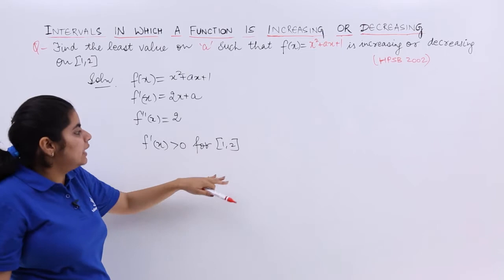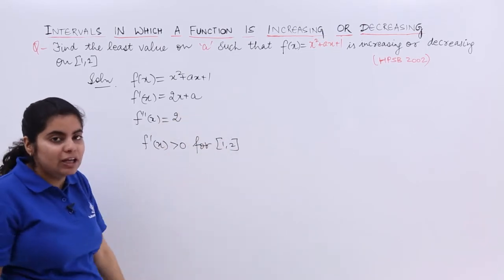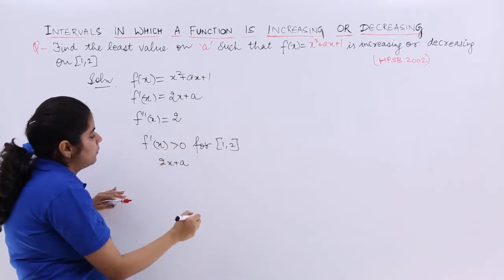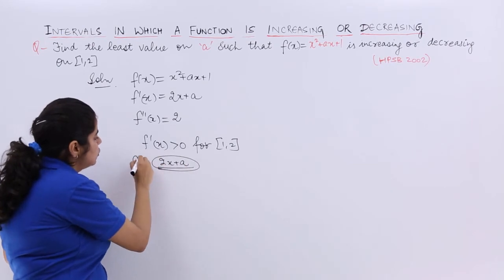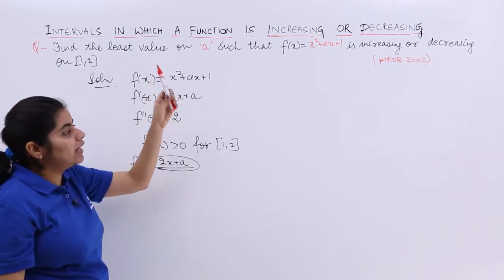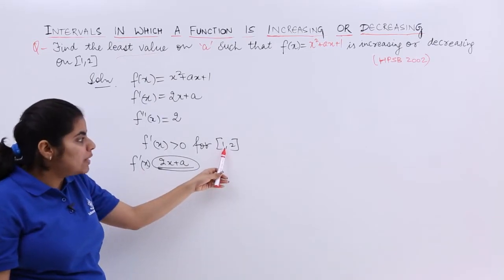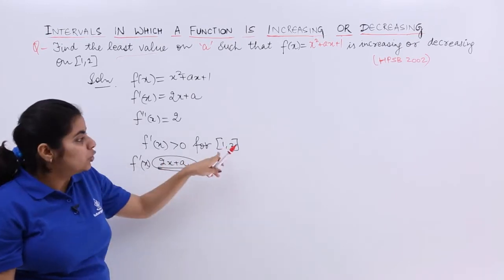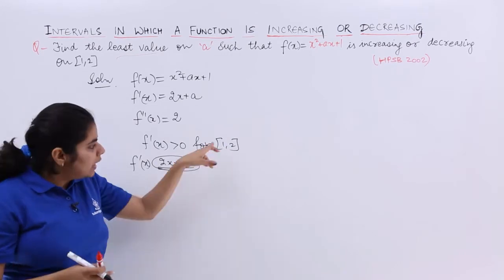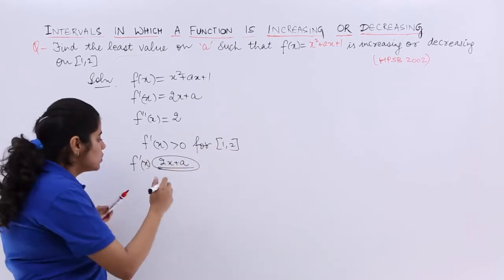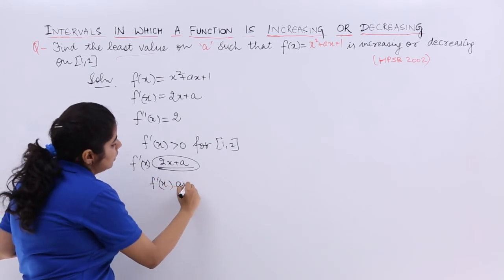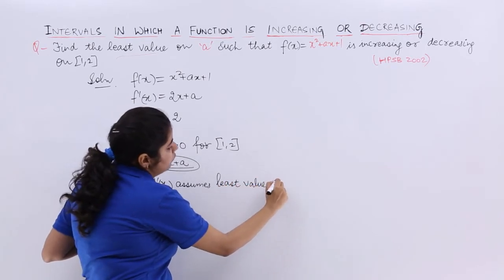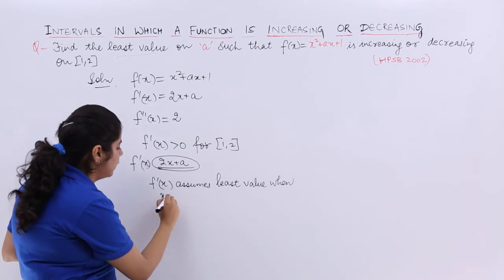When it's always greater than 0, even if you put 1 or 2 or any value in between, my f'(x) which is 2x + a should be such that the least value will be at x = 1. Because 2(2) + a = 4 + a, and 2(1) + a = 2 + a, and any value in between will be greater than putting 1. So f'(x) assumes the least value when x = 1.